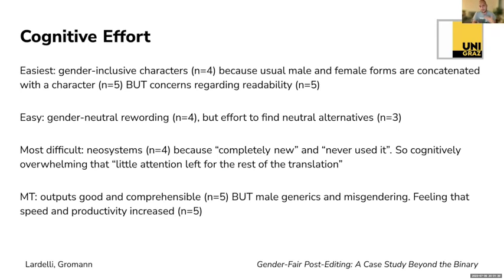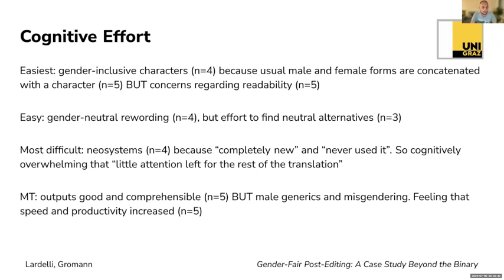Regarding cognitive effort, we asked participants to talk about the different strategies and their solutions. Most participants thought that gender inclusive characters are the easiest strategy because the usual male and female forms can simply be concatenated with a character. However, they had concerns about readability, as a text with many characters can affect reading flow negatively. They found gender neutral rewording fairly easy but noted it is effortful to find neutral alternatives for simple words and to restructure sentences to avoid gender. Most participants thought new systems are the most difficult approach because they are completely new and participants had never used them before, leaving them cognitively overwhelmed with little attention left for the rest of the post-editing task.